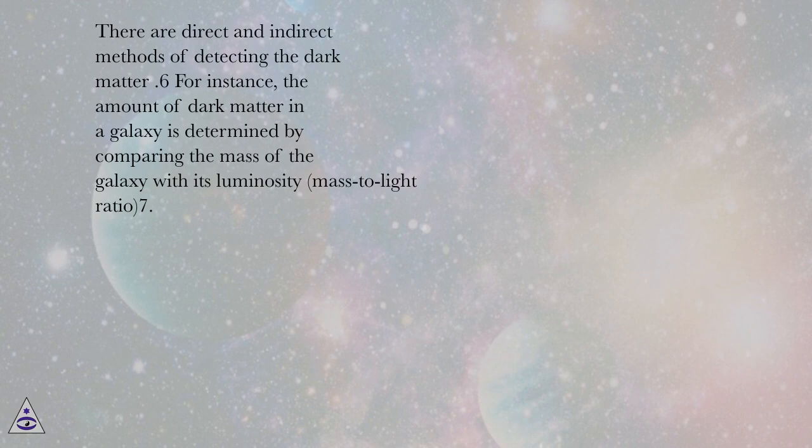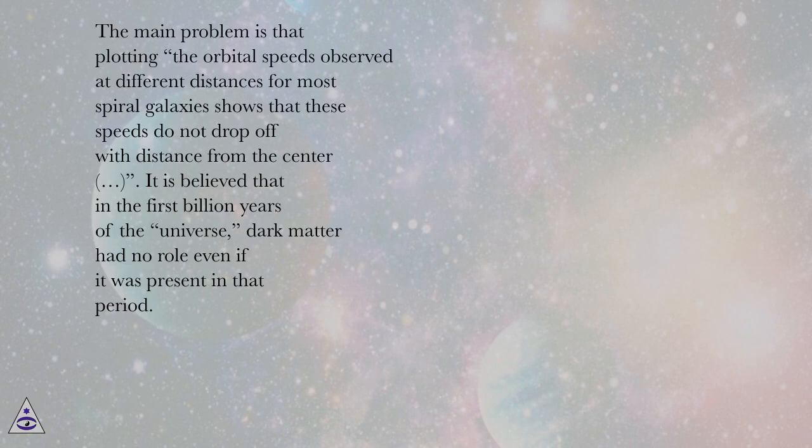The main problem is that plotting the orbital speeds observed at different distances for most spiral galaxies shows that these speeds do not drop off with distance from the center. It is believed that in the first billion years of the universe, dark matter had no role even if it was present in that period.